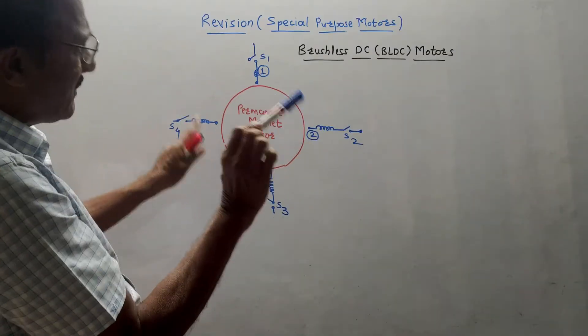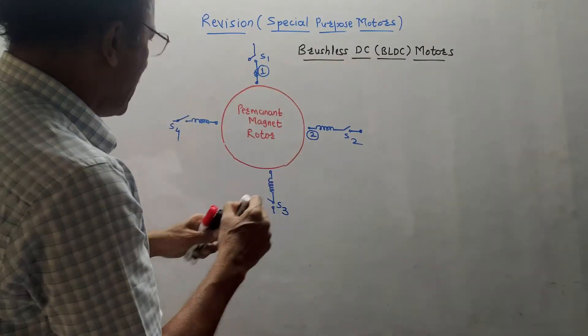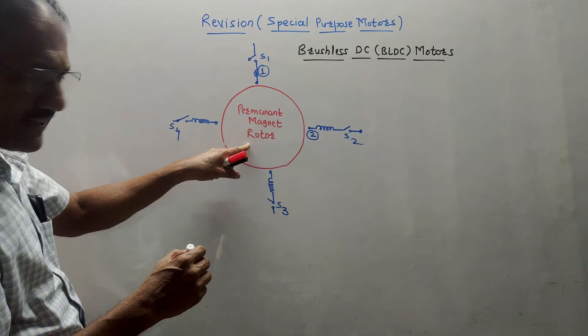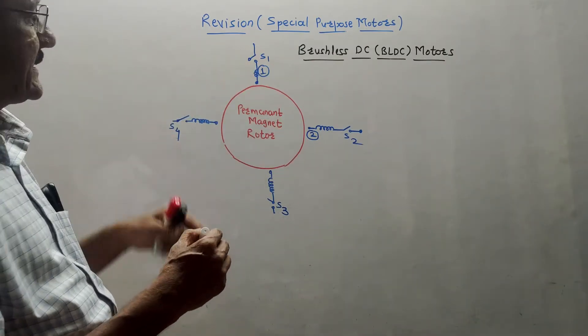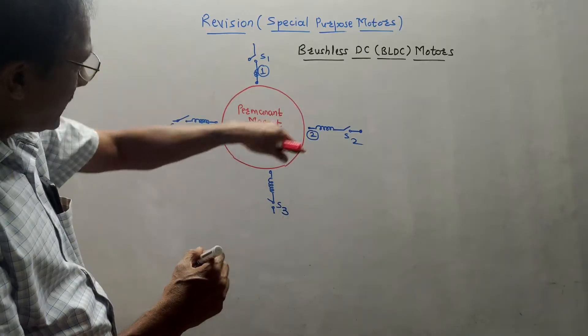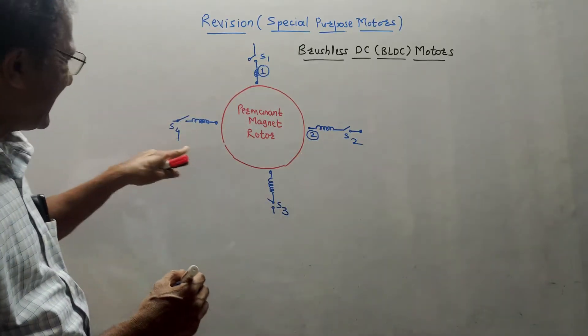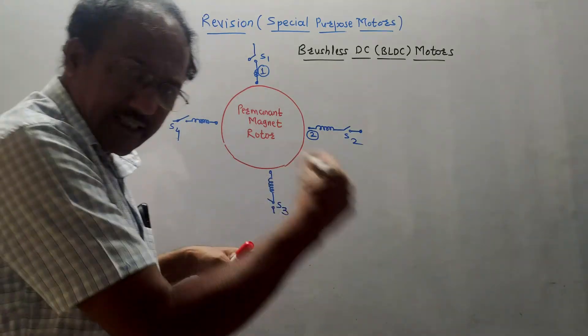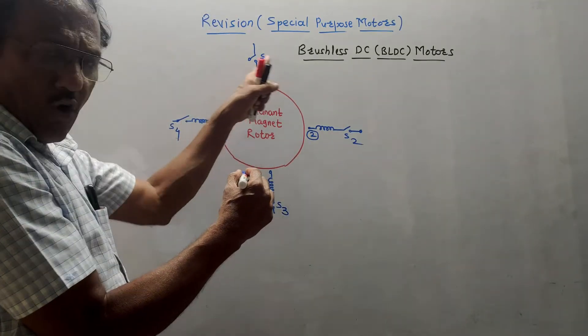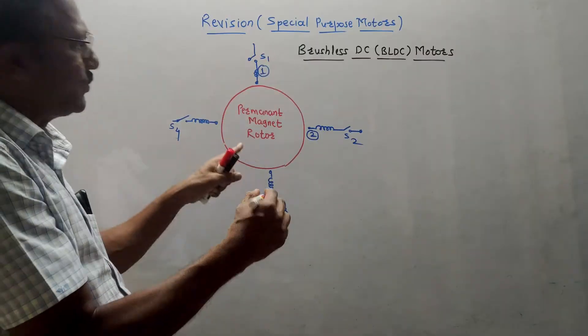Consider the diagram. This is the simple diagram of a BLDC motor. It consists of a permanent magnet rotor. I have shown different windings. I have shown four windings in this case. Now different switches are shown. S1, S2, S3 and S4. All the controlling action, every signal is passed by switching on or switching off a corresponding switch.